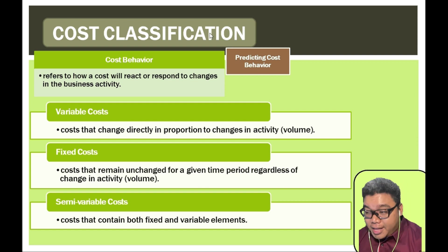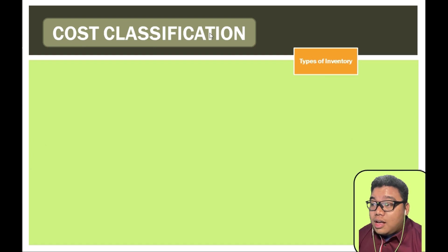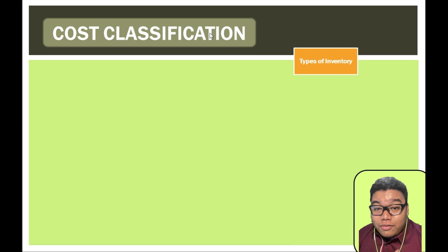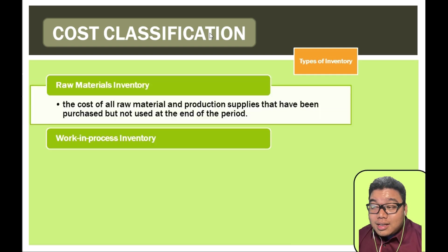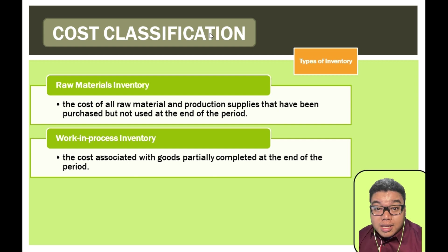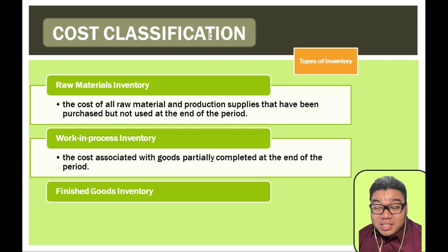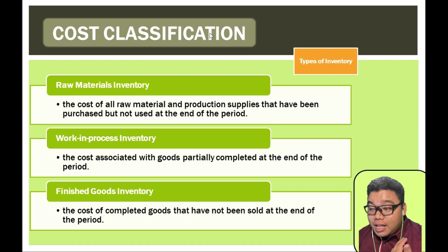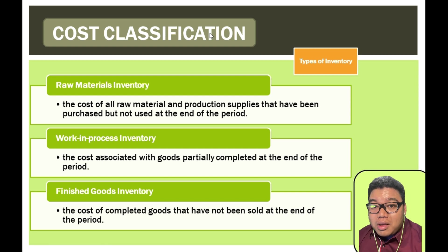For manufacturing companies, we have three types of inventory: raw materials, which are items not yet put into production; work in process inventory, which are items currently in production and classified as work in process when inventory is declared; and finished goods inventory, which are items already finished and awaiting sale. For merchandising companies, we only have merchandise inventory because the finished product is purchased from a supplier.